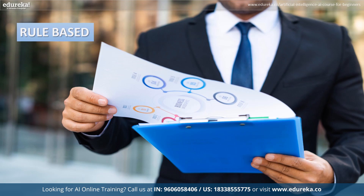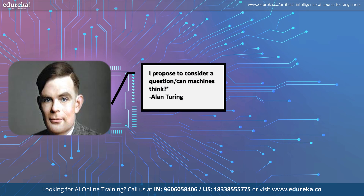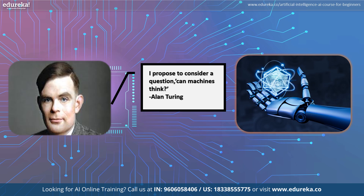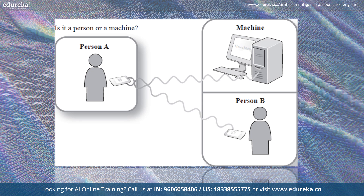AI can also be rule-based and operate under a set of rules and conditions only. Alan Turing was the first person to conduct sustainable research in the field he called machine intelligence. The Turing Test, proposed by Alan Turing in 1950, explores whether machines can exhibit human-like intelligence. It involves a human evaluator communicating with both a human and a machine through a text interface. If the evaluator cannot distinguish between the two, the machine is said to have passed the test. It serves as a benchmark for assessing AI progress and discussions of the nature of intelligence and consciousness.